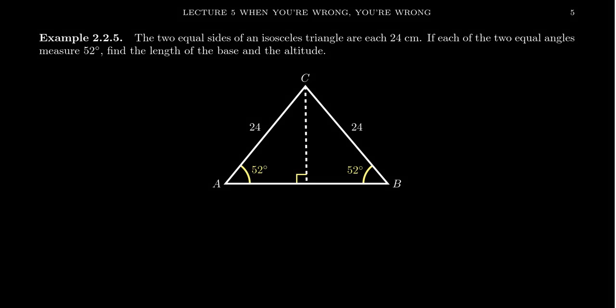In this video, we're going to do a little bit of trigonometry — right triangle trigonometry — but with an isosceles triangle. It turns out that isosceles triangles are deeply connected to right triangles, as we're going to see in just a second.